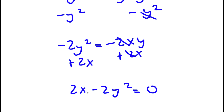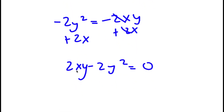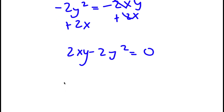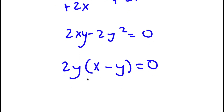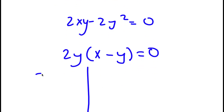I have 2xy minus 2y squared is equal to 0. From here I can simply factor out 2y, so now I have 2y times x minus y is equal to 0. This gives me two equations: 2y is equal to 0, and x minus y is equal to 0.